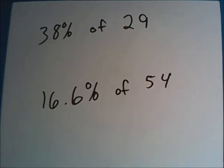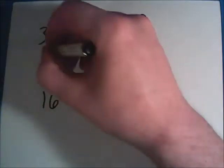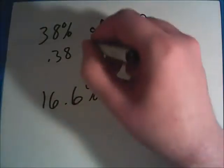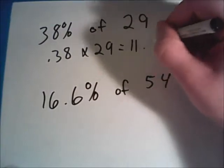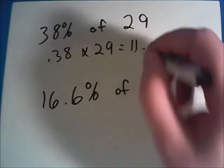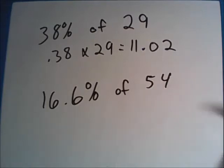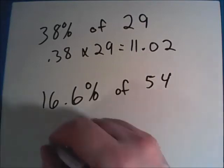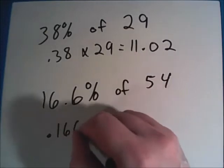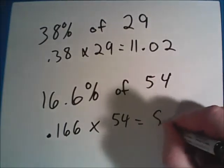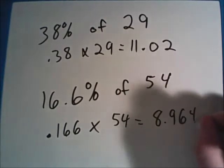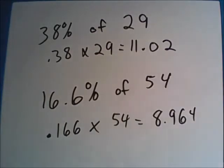The top one is 38%. So we change that to a decimal by making it .38. And we're going to multiply it times 29. So this one should come out to be 11.02. So 11.02 is 38% of 29. That bottom one, we're going to turn the 16.6 into a decimal by making it .166. And take it and multiply it times 54. Here our answer should be 8.964. So 16.6% of 54 is 8.964.